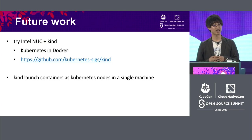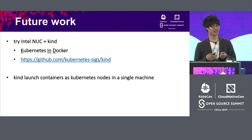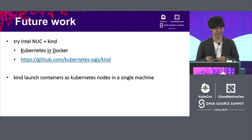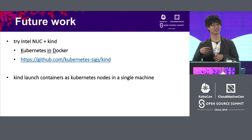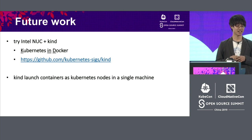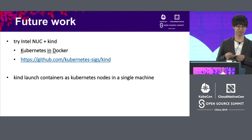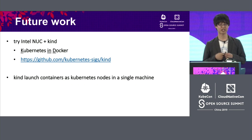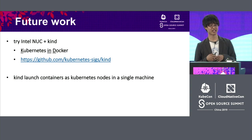Future work: I'd like to get an x86 personal cluster, so I plan to try using an Intel NUC and KIND. KIND stands for Kubernetes in Docker — it runs Docker containers as Kubernetes nodes on a single machine, so we can build a multi-node Kubernetes cluster on one machine. And of course, today Raspberry Pi 4 was announced, so I'd like to build with that too.